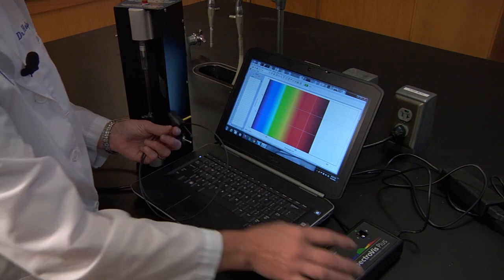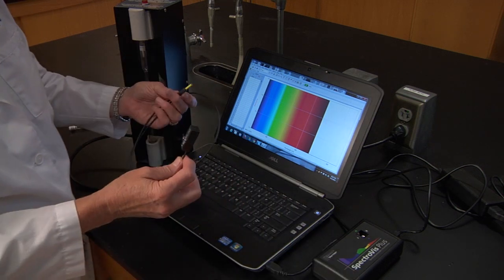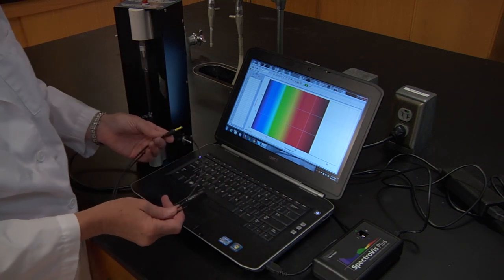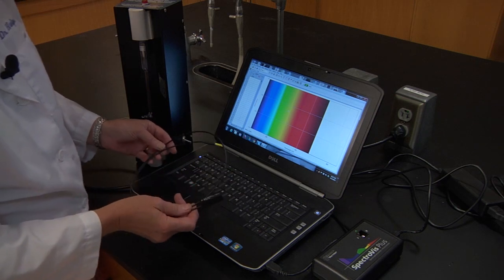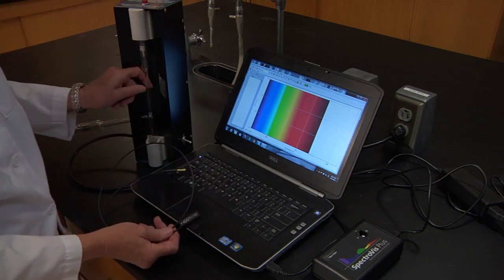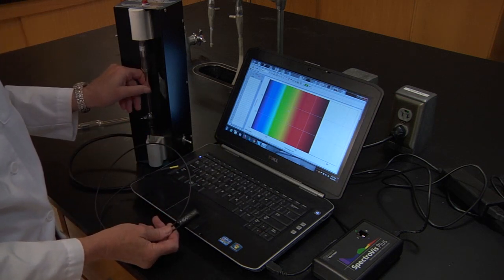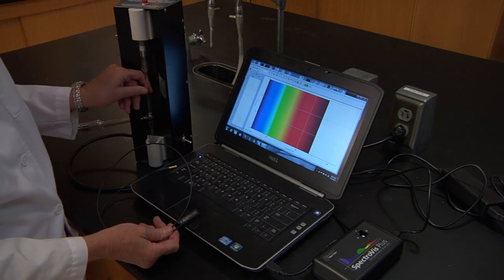We're going to use a spectrophotometer and a fiber optic cable to measure the wavelength and the intensity generated by excited hydrogen atoms.